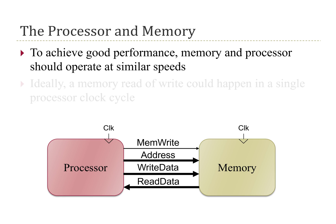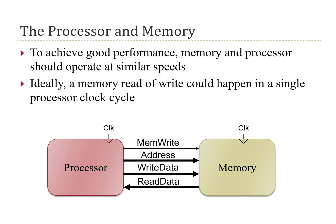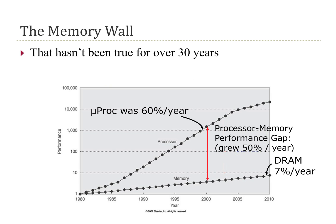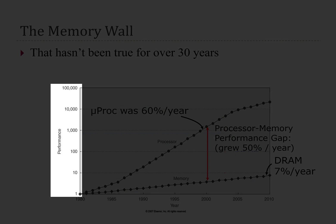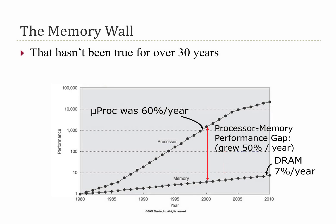Ideally, that similar speed would mean that a memory read or write could happen in a single processor clock cycle, so that any time a processor requests a piece of data, the memory returns it in a single cycle. Unfortunately, that hasn't been true for over 30 years. This figure here shows the relative speed or performance of both processors and memory over the last 30-some odd years.